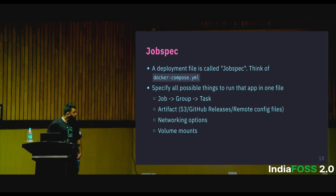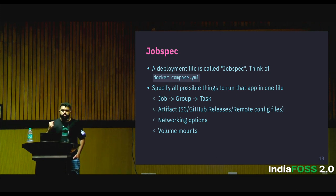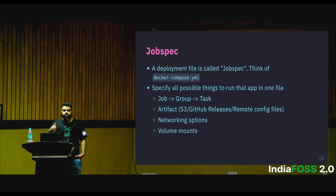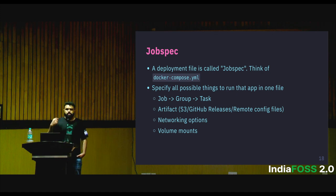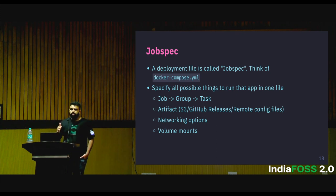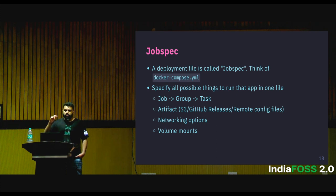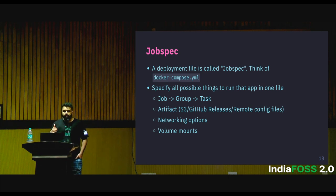To deploy Nomad applications, you write a job spec. Think of it like a Docker Compose file where you list all dependencies to run an application — image name, volume mount points, environment variables, network configuration. Nomad has a hierarchy: you specify the job at the top level, then multiple groups under the job, then multiple tasks under each group. The important thing to know is that all tasks within the same group will run on the same node.